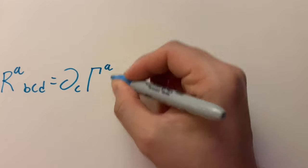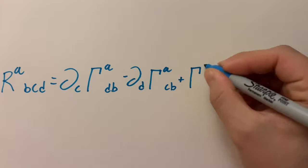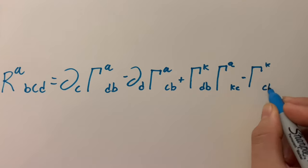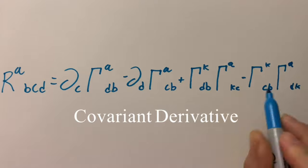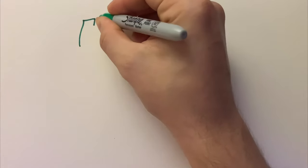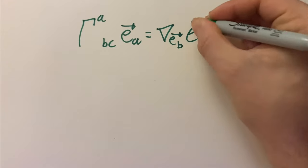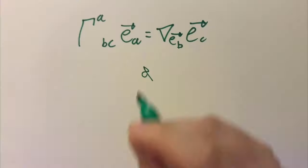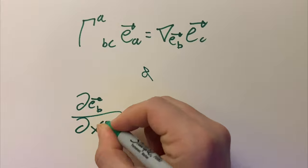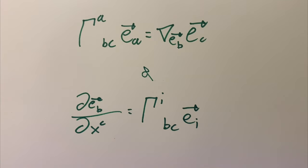Its components are given by an expression involving those connection coefficients — those capital gamma terms. The connection coefficients come about when you take the covariant derivative of basis vectors in another coordinate direction, or the covariant derivative of a basis vector along another basis vector. Just think of it as a special way of taking a derivative in some specific direction. The resulting vector can be expressed as an answer involving those connection coefficients. In general, these connection coefficients can be given in terms of the metric on your space.